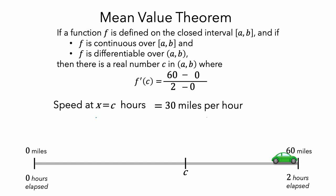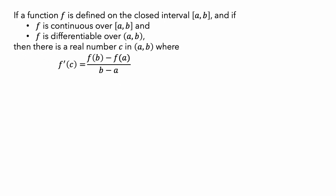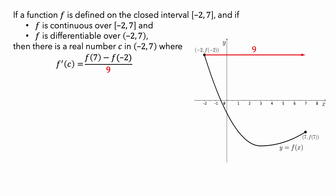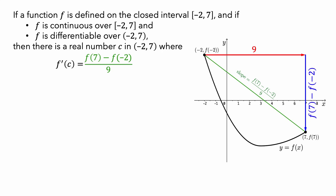It can also be helpful to think about what the mean value theorem says in terms of a graph. Here is a graph of a function f. Pause the video and see if you can find a value c so that f prime of c is equal to the difference quotient. The coordinates of the left endpoint are negative 2 comma f of negative 2, and of the right endpoint are 7 comma f of 7. So a is negative 2, b is 7, and the denominator is equal to 9. The numerator represents the amount of change in f, and the value of this difference quotient equals the slope of the secant line connecting the two endpoints.